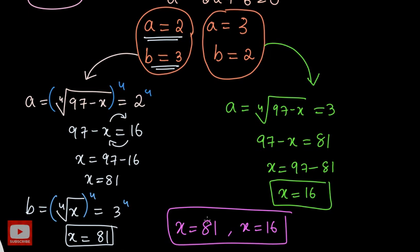So we can finally conclude that this radical equation has two possible solutions: x = 81 and x = 16. And that brings us to the end of the video. I hope you enjoyed the solution. For more such interesting videos, kindly subscribe to my channel. I will see you all in the next video.